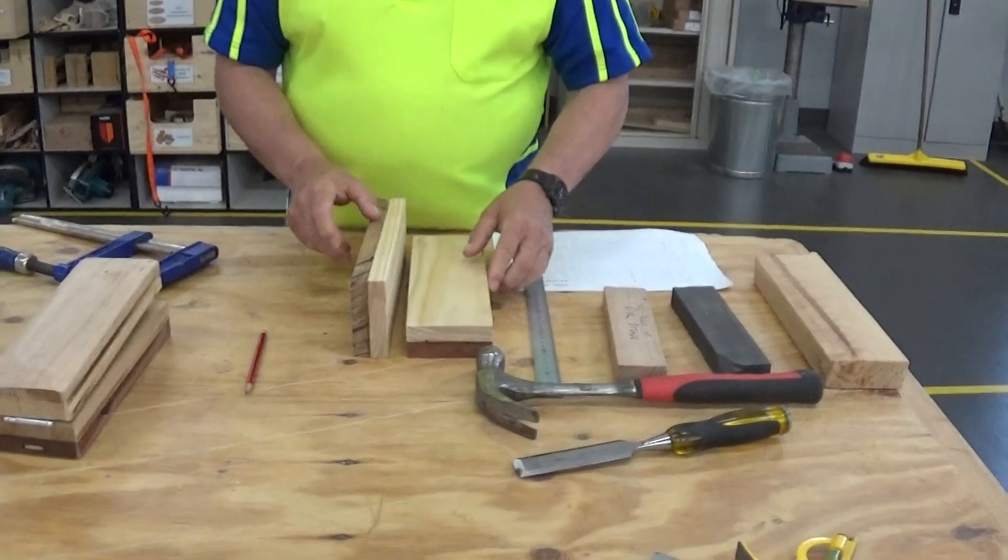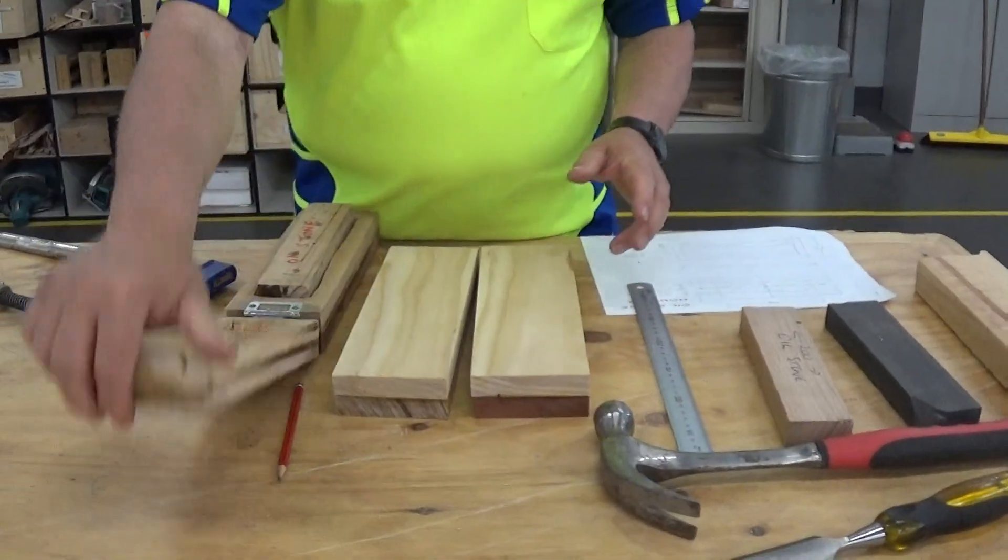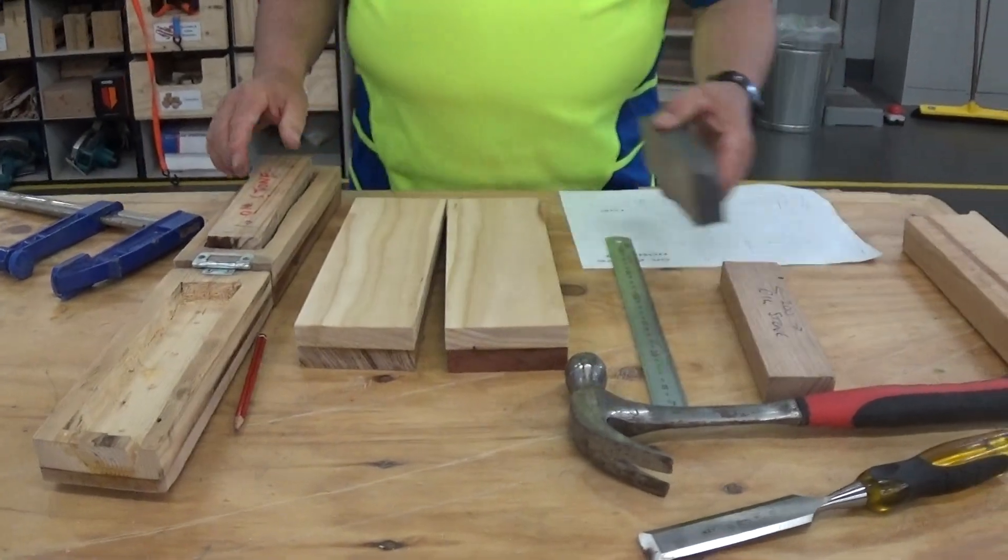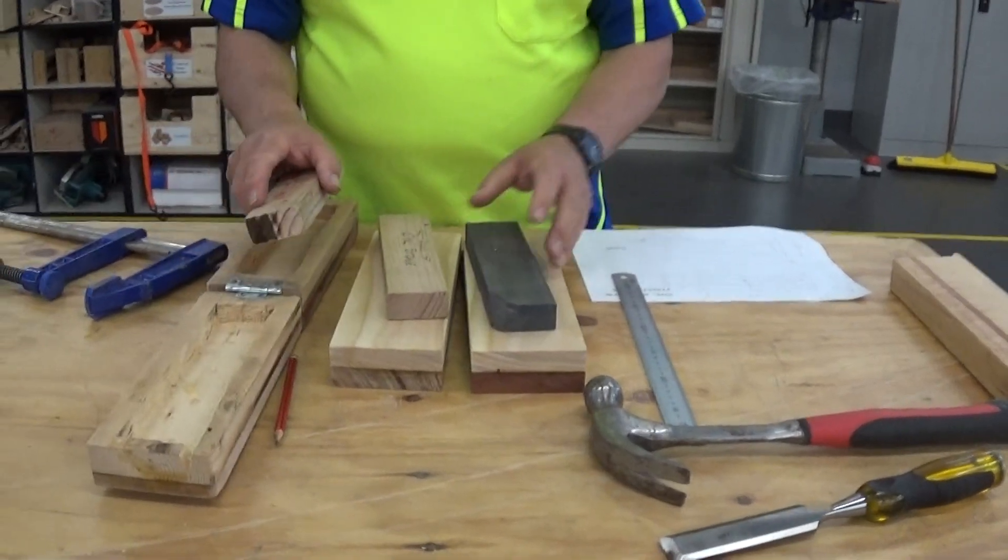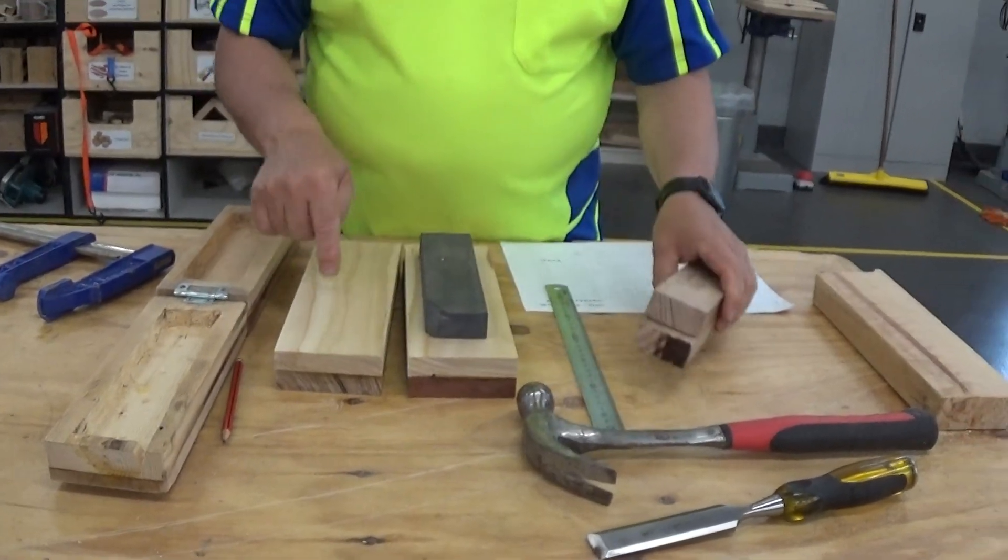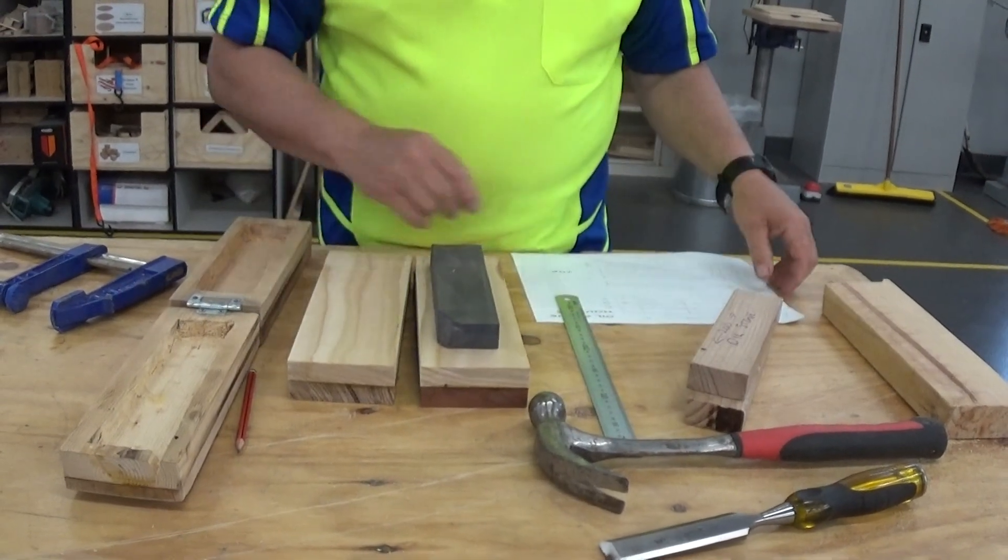So we want to drill in here, similar to what we've got here, like this. Now I've got some blocks of timber that are oilstone templates, and what we need to do is set out where we're going to chisel this out or drill this out.